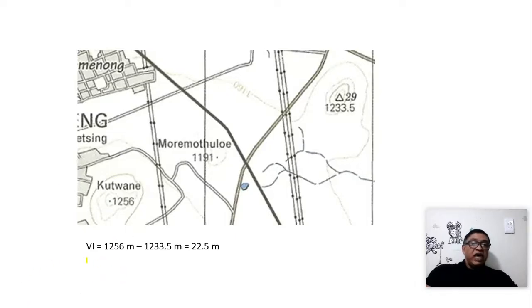First step in order to calculate my VI, I have to remember VI is vertical. So I have to work out the difference in height between the two points. I take the larger number and minus the smaller. This is in meters. So I took 1256 and minused 1233.5 meters from it, which gave me an answer of 22.5 meters. So I worked out my VI.